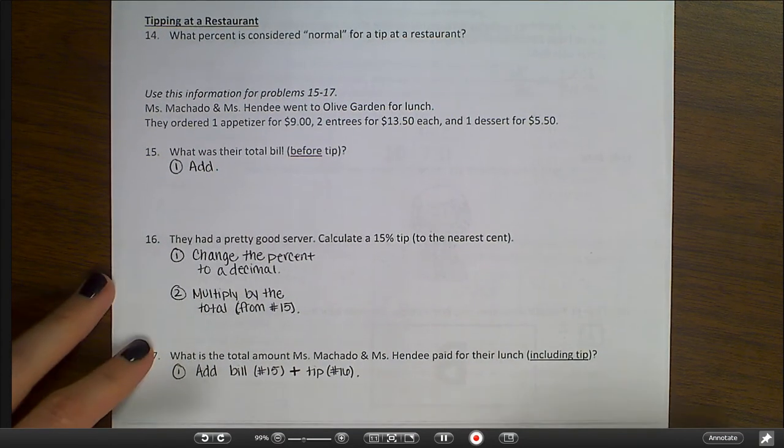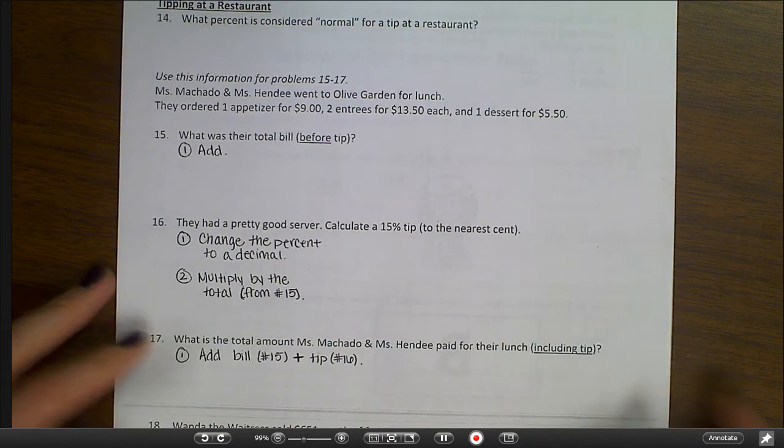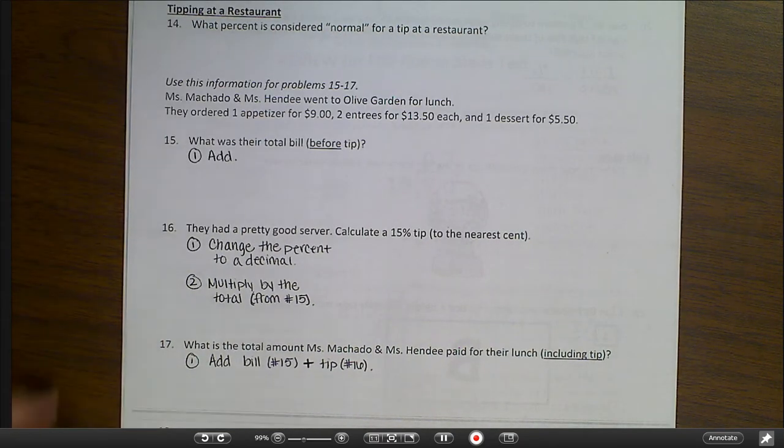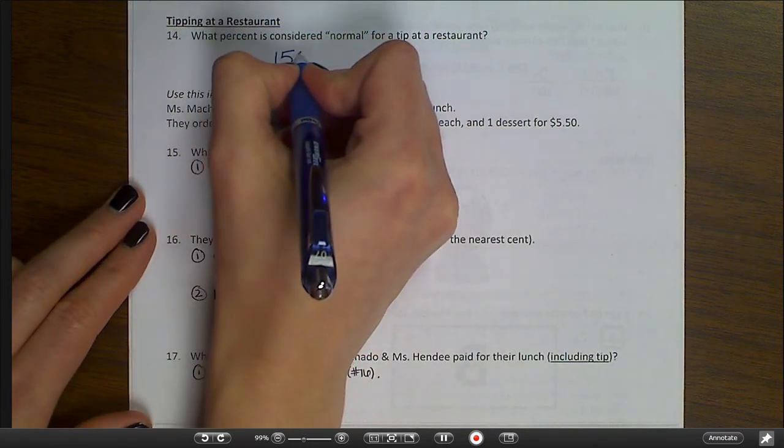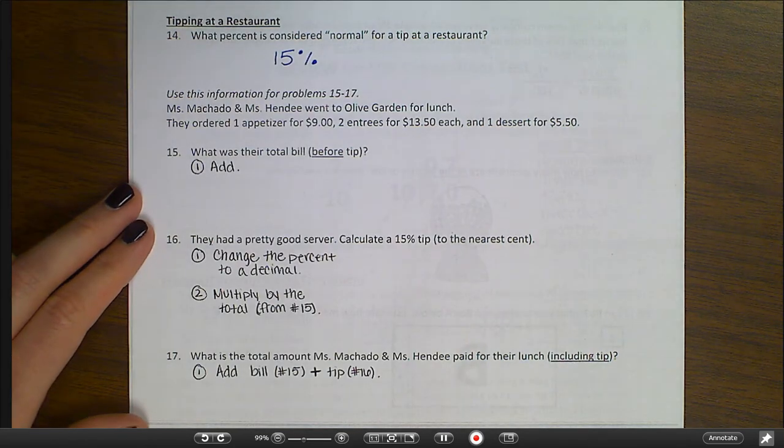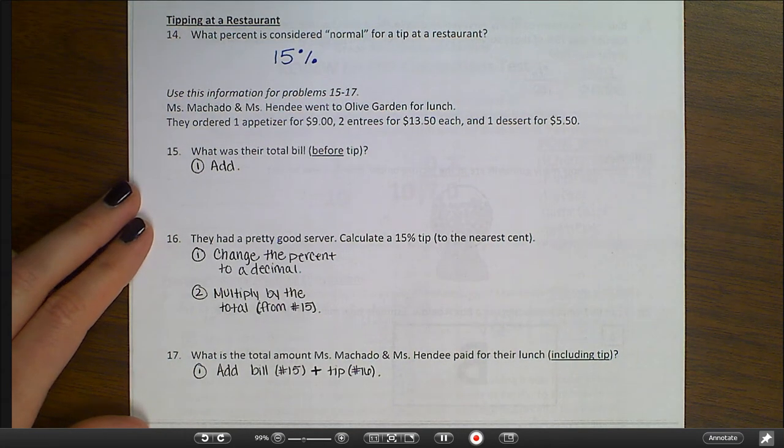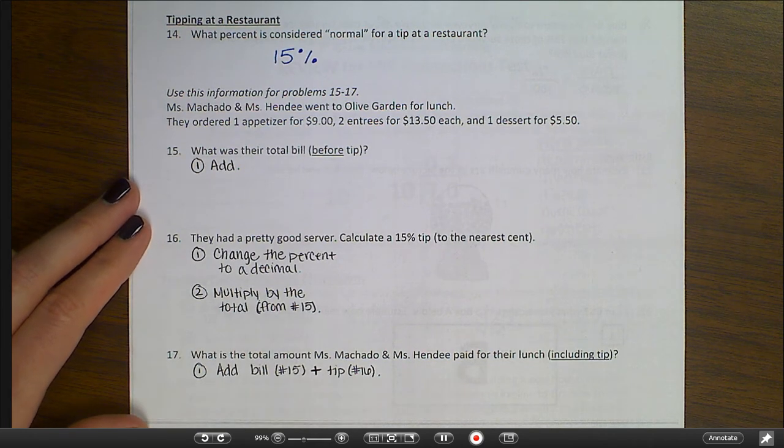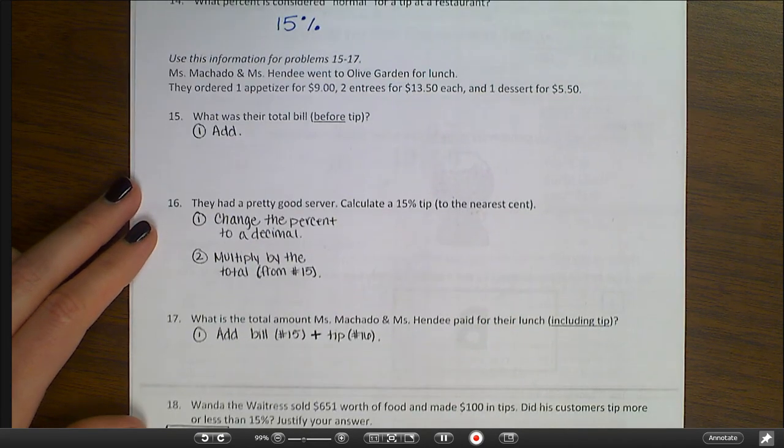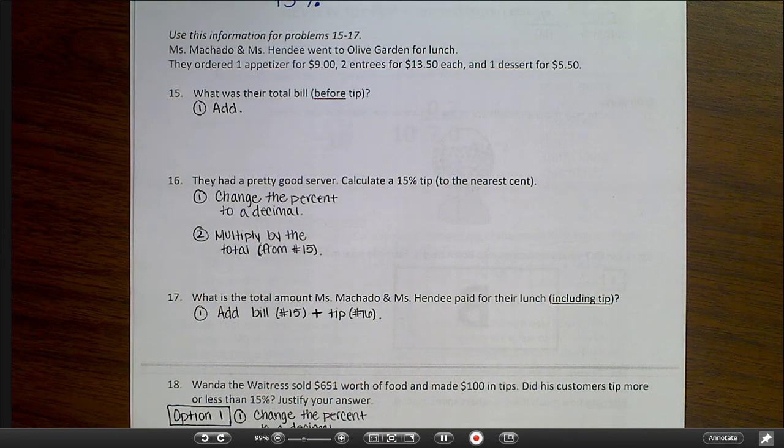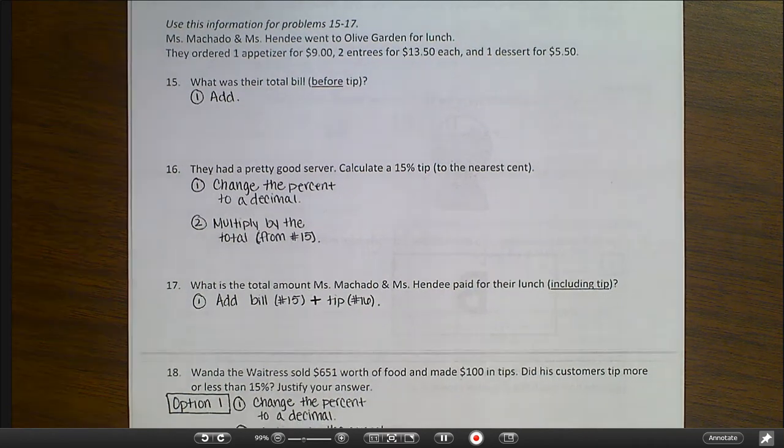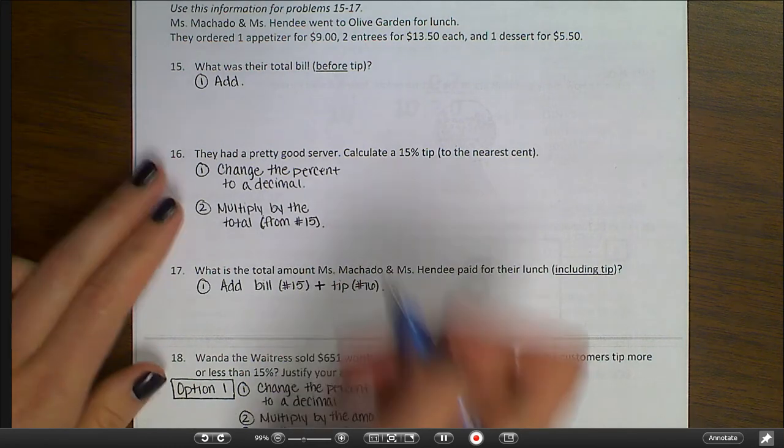Number 14, your next section is tipping at a restaurant. So number 14 says what is considered a normal tip for a restaurant. Normally, it's about 15%, although it's up to your discretion or your opinion as to how much you actually tip. But 15% is pretty customary in the U.S. For problems 15 to 17, you'll need to know, Ms. Machado and Ms. Hendy went to Olive Garden for lunch. They ordered one appetizer for $9, two entrees for $13.50 each, and one dessert for $5.50. First, I need to actually figure out what was their total bill before the tip.